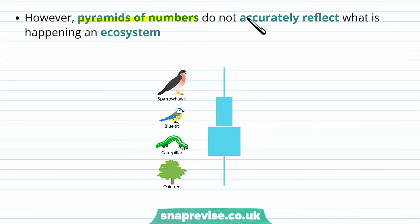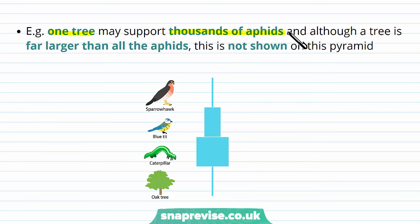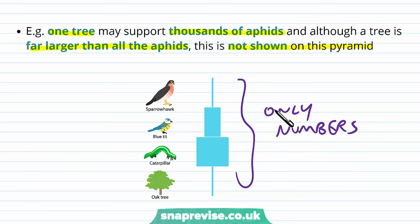However, pyramids of numbers don't accurately reflect what is happening in an ecosystem. For example, many, many caterpillars can feed on one single oak tree, so even though we've gone up a level in the food chain, we've actually gone up in numbers too, which is unusual. One tree might support thousands of aphids, and although a tree is far larger than all the aphids, this isn't shown on the pyramid. Because it only considers numbers, this isn't an accurate representation — one oak tree is far larger and more massive compared to thousands of caterpillars or aphids, so using numbers alone isn't enough.